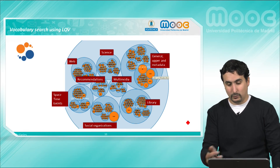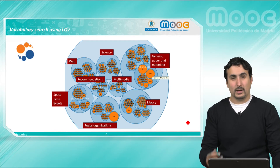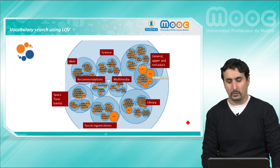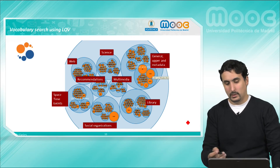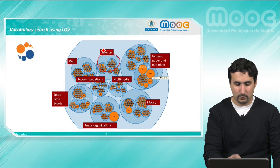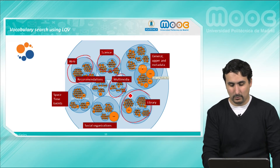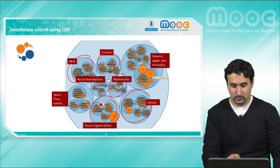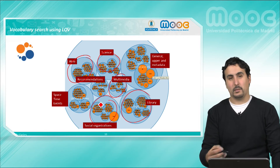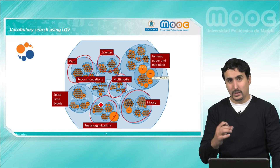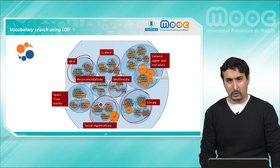This is what LOV offers to the user. It has information about vocabularies and it can categorize them based on the domain they cover. So we will have vocabularies for science, for web, information about multimedia, libraries, or social organizations. As we see here, we have different bubbles — each bubble represents a vocabulary, and the bigger the bubble, the more used the vocabulary is.